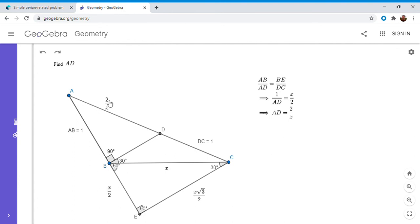And once we know that, can you see how to finish off the problem? So it turns out we can use the Pythagorean theorem to finish this off. Triangle AEC is a right triangle, and so therefore we can apply the Pythagorean theorem. So AE squared plus EC squared has to equal AC squared. And AE is 1 plus x over 2, and EC is x root 3 over 2, and AC is 2 over x plus 1.